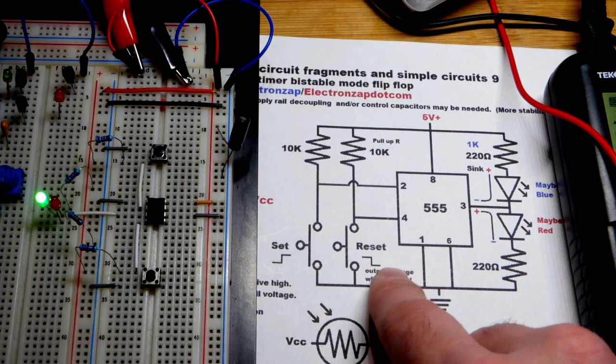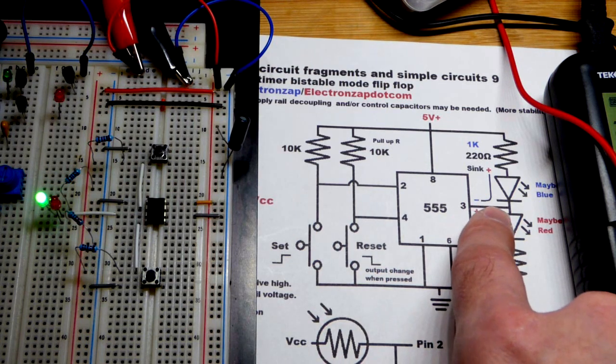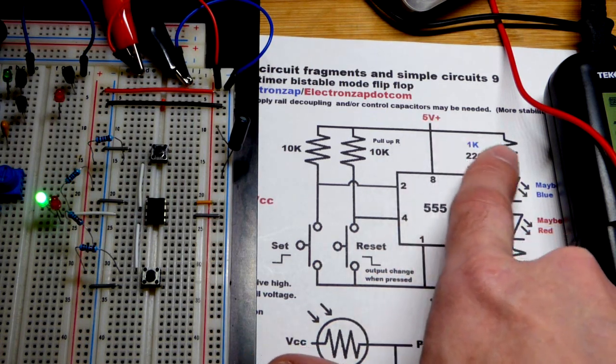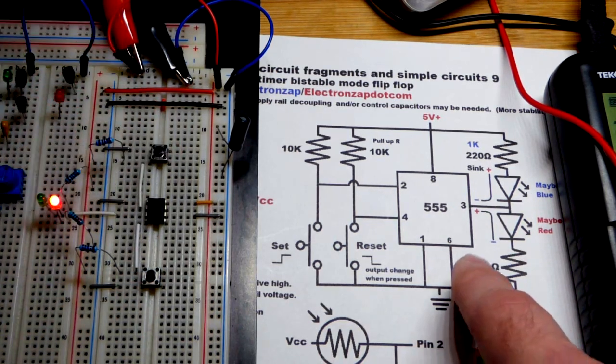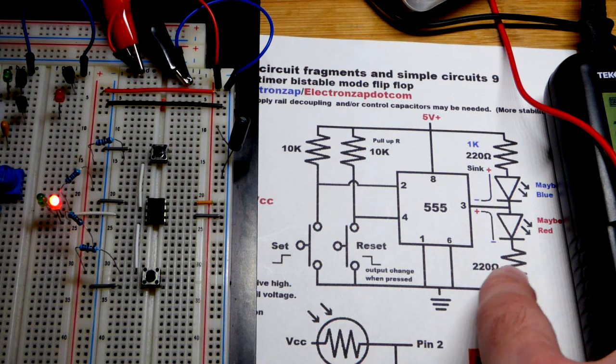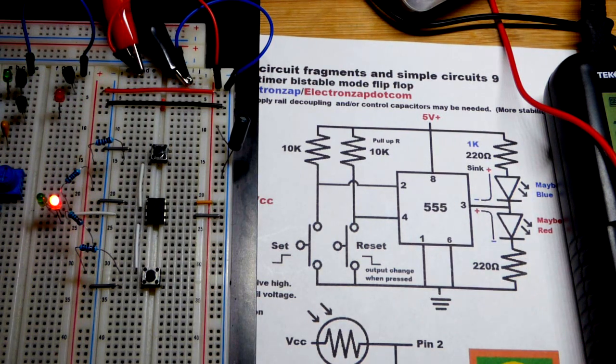So you can see negative there. If you see the green LED, right there. And if you see the red LED, that means the output is high. Right there, the way that we have it wired up.